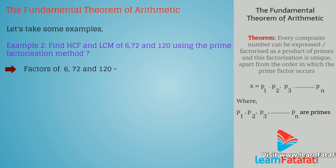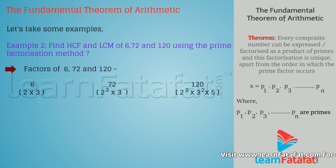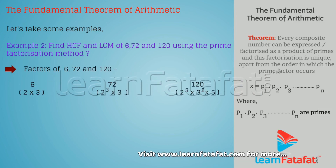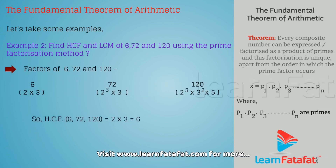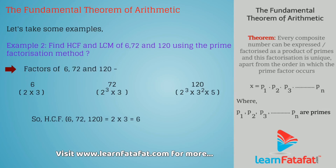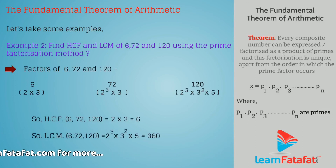Now we have the factors of 6, 72, and 120. Therefore, the HCF of these numbers is 2 into 3, that is 6. And the LCM of these numbers is 2 cubed into 3 squared into 5, which is equal to 360.